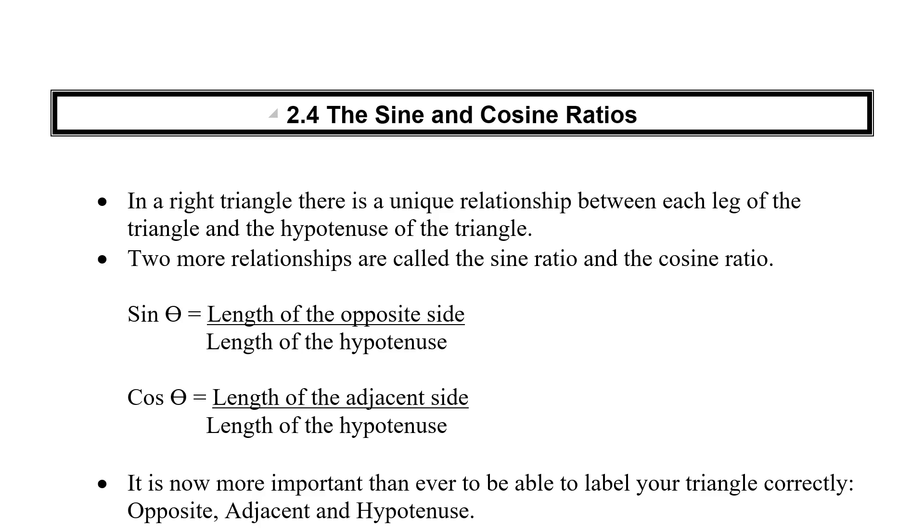So the first one we're going to call the sine ratio. Sine of the angle is equal to the opposite side divided by the hypotenuse. So sine is opposite over hypotenuse.